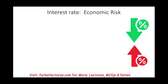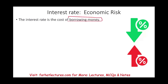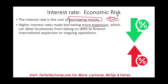GDP, interest rate, and inflation all affect each other and affect currency. Interest rate is the cost of borrowing — the cost of renting money. Higher interest rates make borrowing more expensive, which can deter businesses from taking on debt. If interest rates are high, you're going to borrow less to finance your expansion, which means you cannot expand your operations. So you want interest rates to be lower, because that reduces the cost of operating the business.